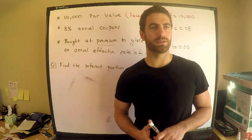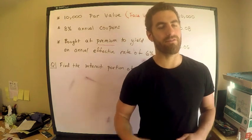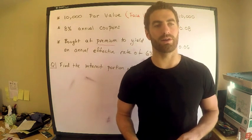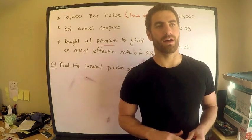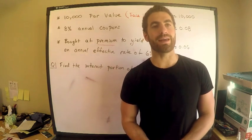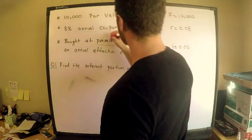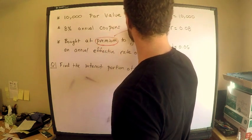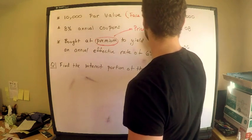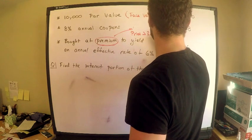When you buy a bond at a premium, you're buying it for a price which is more than the redemption value. You're paying some amount of money which exceeds the redemption value — that excess amount is the premium. So with regards to this premium, the price exceeds the redemption value: price is greater than the redemption value.